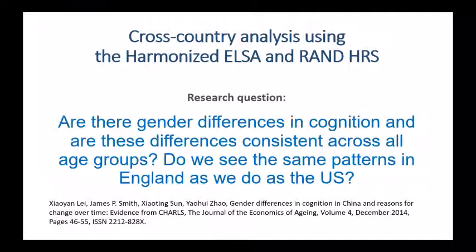We're going to do a simple cross-country analysis using the harmonized ELSA data and the RAND HRS data, as a quick way to see some of the advantages of using harmonized data when comparing between different countries. We're going to ask: are there gender differences in cognition, and are these differences consistent across all age groups? And do we see the same pattern in England as we do in the US? This is coming off some work that was done on the Chinese Health and Retirement Survey, which is called CHARLS.